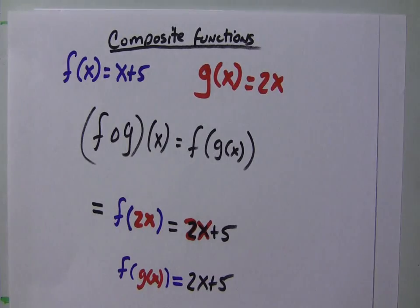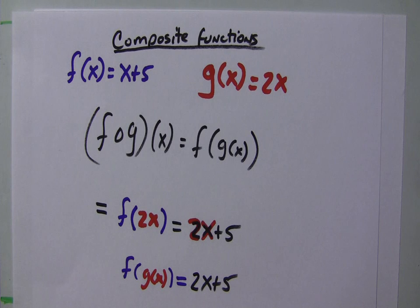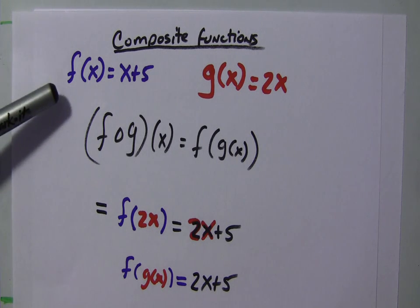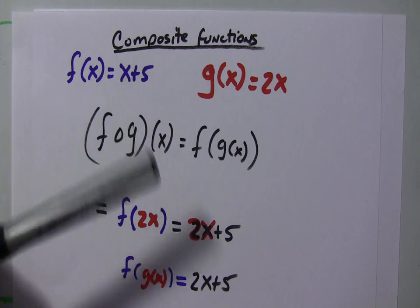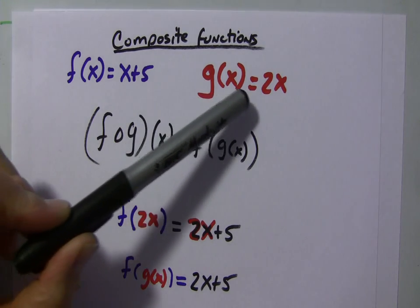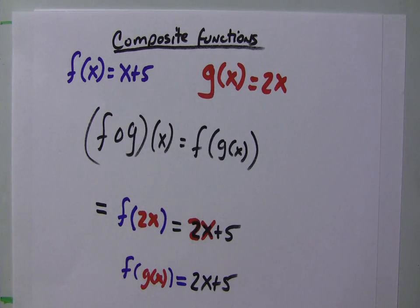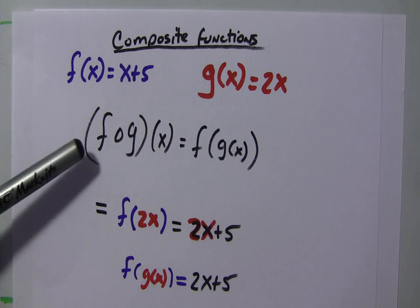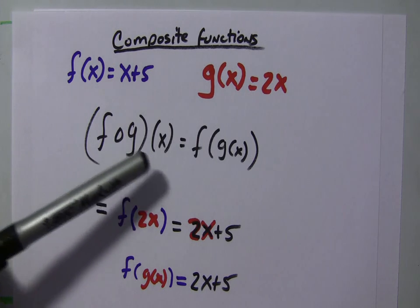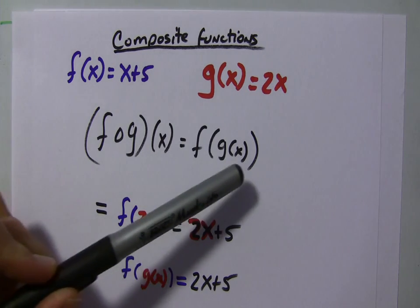For the first example, a rather straightforward one, let's pretend we have this function f of x equals x plus 5, and another function g of x equals 2x. We're asked to make a composite function of them, and in this particular order, order matters. f of g of x, which equals f of g of x.